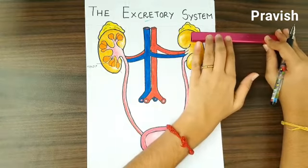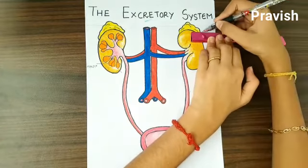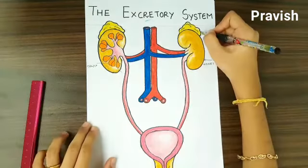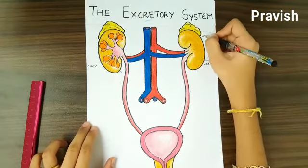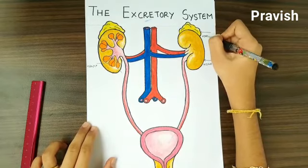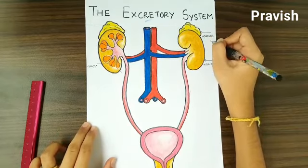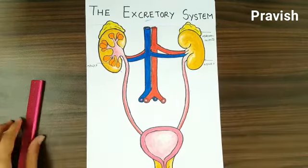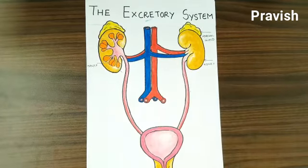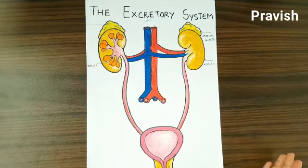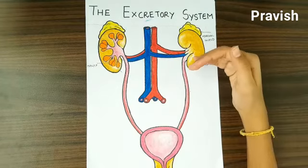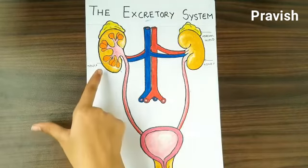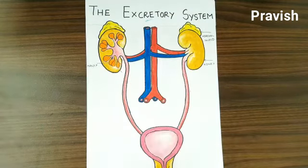So this adrenal gland is not a part of the urinary system, but it is present above the kidneys. Now the blood comes to the kidneys and gets partially cleaned — that means all the waste materials except carbon dioxide come to the kidneys. This calyx present here will clean it and send it back to the veins.